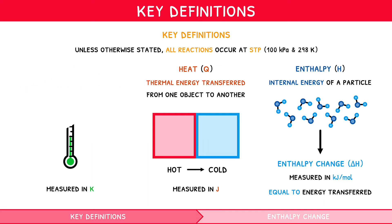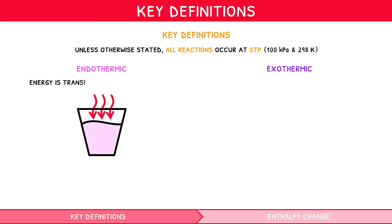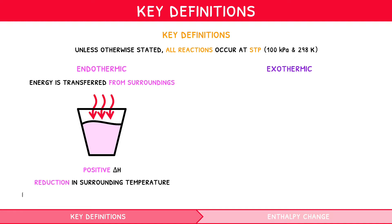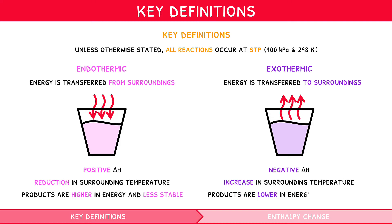When discussing enthalpy, all reactions can be classified into two groups: endothermic and exothermic. Endothermic reactions are those where energy is transferred from the surroundings to the reaction, i.e. they take in energy. They are associated with a positive delta H and a consequent reduction in temperature in the surroundings. The products of these reactions are higher in energy and less stable. Exothermic reactions transfer energy from the reaction to the surroundings, i.e. they give out energy. They are associated with a negative delta H and an increase in temperature in the surroundings. The products of these reactions are lower in energy and more stable.